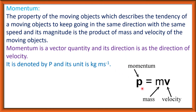When P is equal to mV, that means momentum P is equal to mass into velocity. Here M is for mass and V is for velocity. So P is equal to mV.